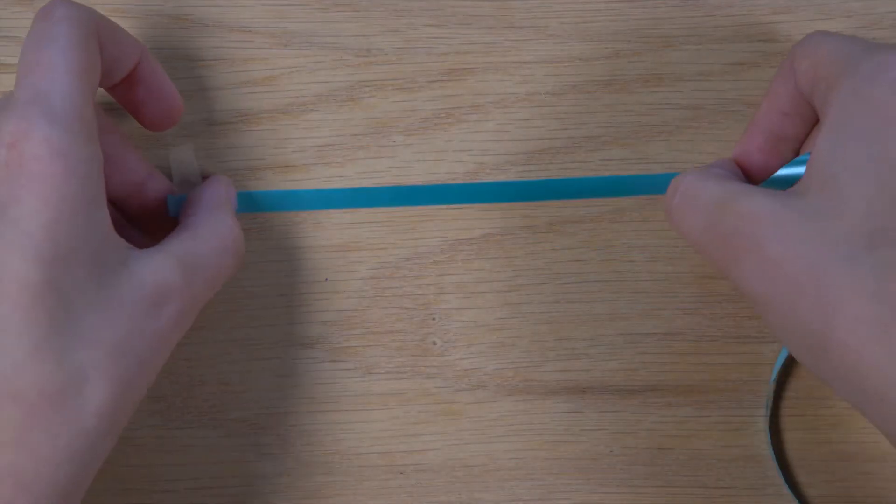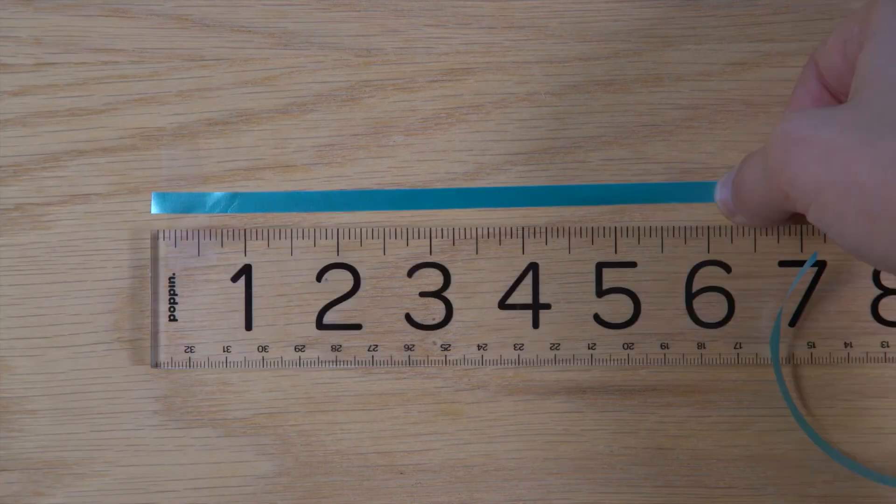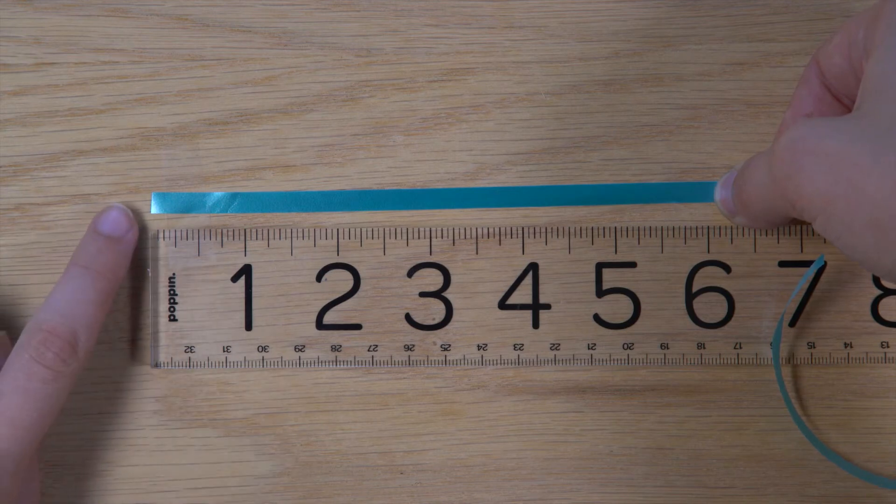Tape the ribbon down on a flat surface or table. After doing so, use your ruler to measure the length of your wrist. Be sure to line up the ribbon with zero.